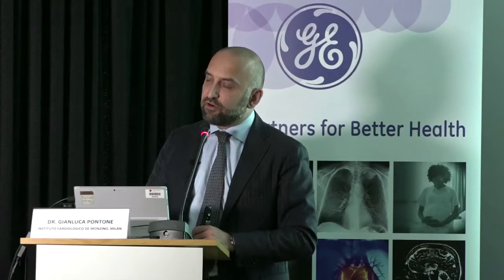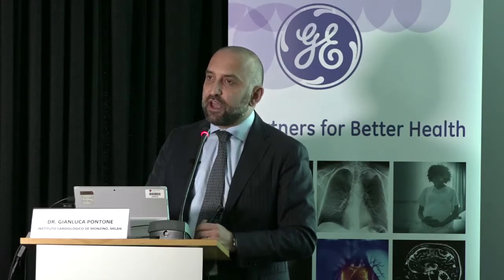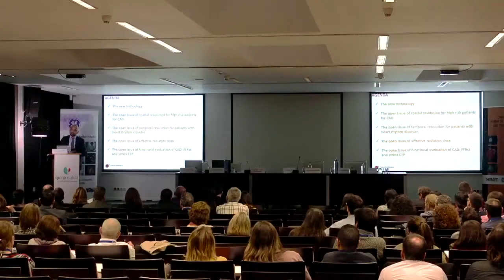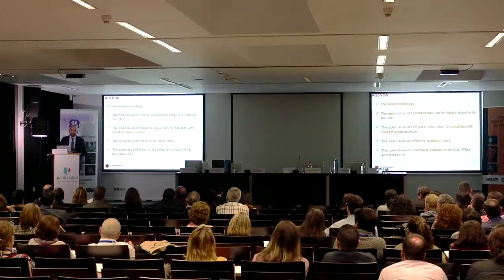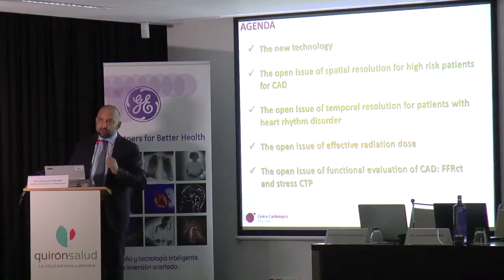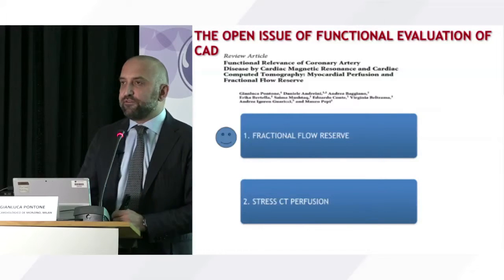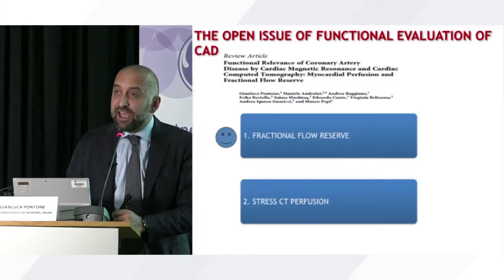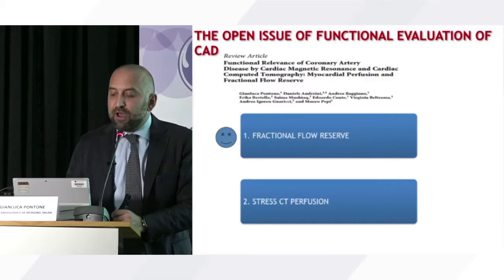All this improved spatial and temporal resolution is mainly useful to do something more: evaluate the functional significance of coronary artery disease. Historically, CT has been considered an anatomical test describing only anatomical findings — a very big limitation because cardiology is more focused on the functional aspects of coronary artery disease. To do this with CT is quite mandatory, and we have two ways to evaluate functional relevance: fractional flow reserve (FFR-CT) and stress CT perfusion.